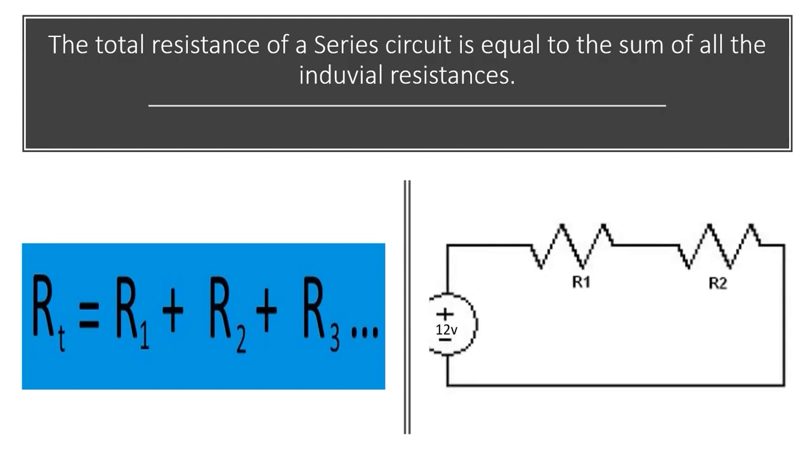We have a 12-volt battery in this case. We have 3 ohms on R1, 3 ohms on R2. So this is going to give us an RT of 6 ohms. RT is equal to the total of all the resistors.